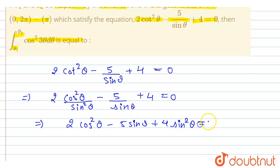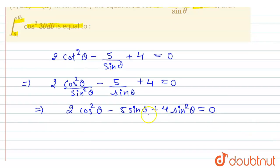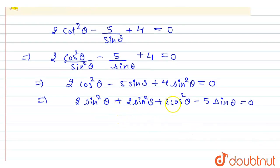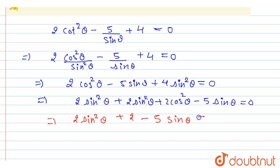We rewrite using the identity: replacing 2cos²θ with 2(1 − sin²θ) and expanding, we get 2sin²θ + 2cos²θ = 2. The equation simplifies to 2sin²θ + 2 − 5sinθ = 0, which gives us 2sin²θ − 5sinθ + 2 = 0.